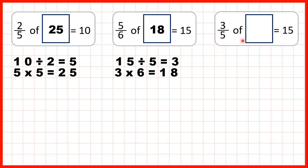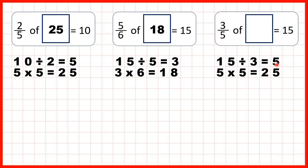Finally, three-fifths of what equals 15? It's a missing number problem, so instead of dividing by the denominator we divide by the numerator: 15 divided by 3 is 5. Then we take that 5 and multiply by the denominator to give us a total quantity of 25. We can check that it works: 25 divided by 5 is 5, and 5 times 3 is 15.